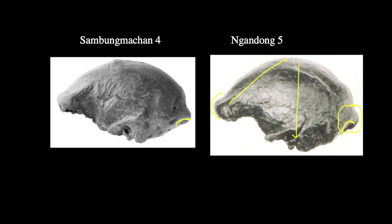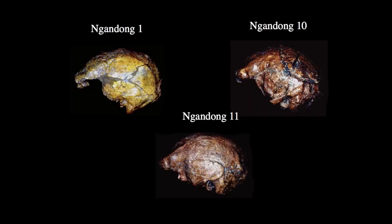The overall cranial vault height has increased, associated with expanded endocranial volume and a larger brain. The length has also increased slightly, and looking superiorly, the breadth of the skull has also expanded. Much of the morphology has been replicated between the earlier Sambungmacan specimen and the later Ngandong specimen. Ngandong actually has a wealth of cranial material preserved. Here are three specimens — Ngandong 1, Ngandong 10, and Ngandong 11 — in all of which we can see many of these characteristics replicated.